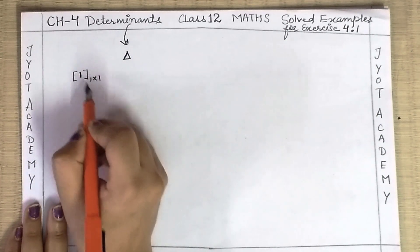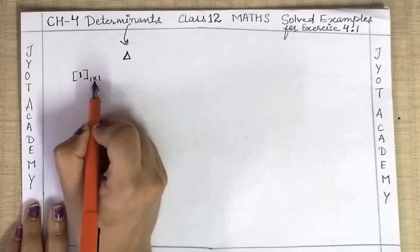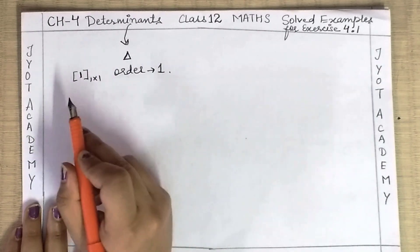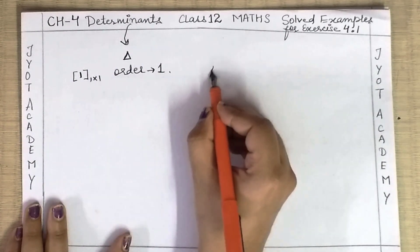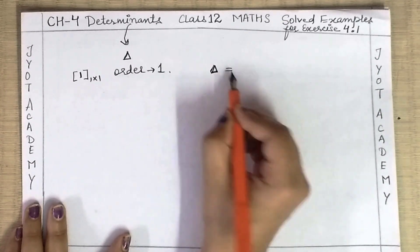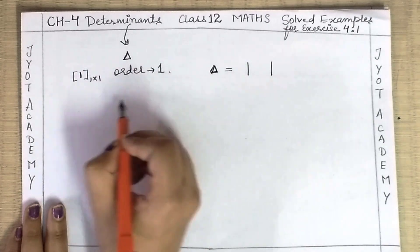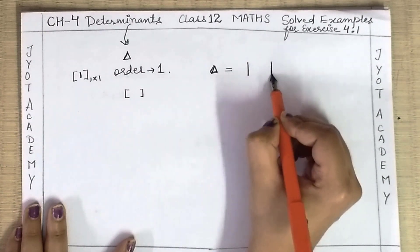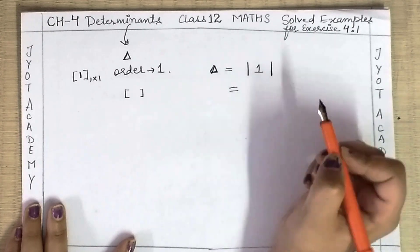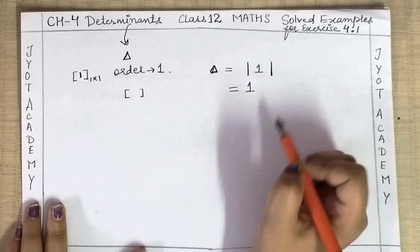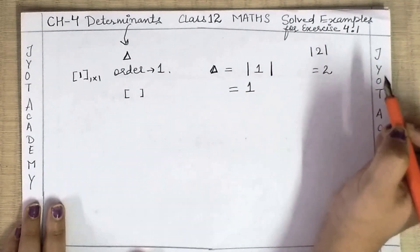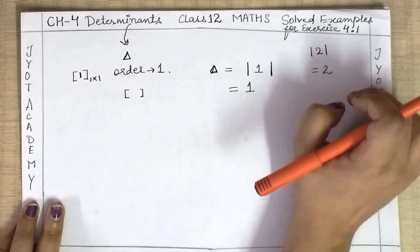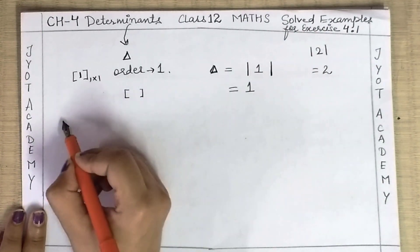For a 1×1 matrix, the determinant is simply that one element itself. So the determinant of order one is directly that element — there is no calculation involved. If the element is 1, the determinant is 1; if it is 2, the determinant is 2. Right, so in order one, you get the same element back.